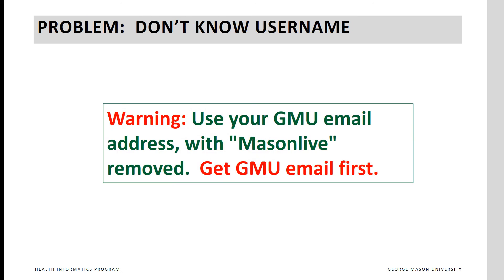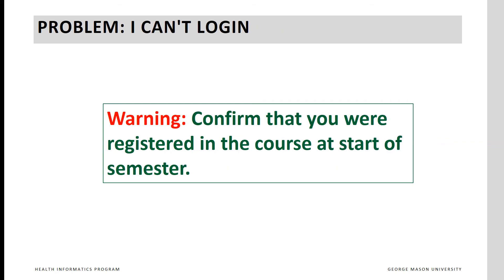Your username is your GMU email address with MasonLive removed. This assumes that you have a GMU email. If you cannot log in, confirm that you are using a GMU email address without MasonLive, and confirm that you were enrolled in a HAP course in the current semester at the start of the semester. Latecomers need to contact the instructors. If you are still unable to log in, use the forgot username and password link on the login page to reset your password.